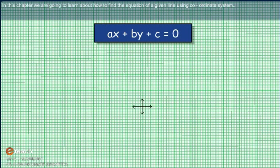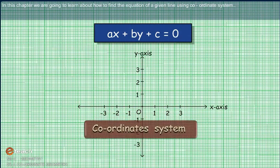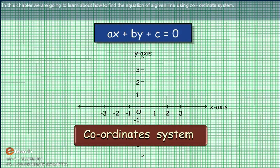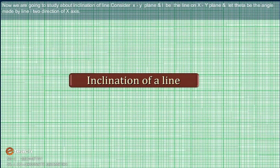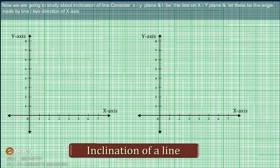In this chapter, we are going to learn about how to find the equation of a given line using a coordinate system. We are going to study about inclination of a line. Consider the XY plane and let L be a line on the XY plane, and let theta be the angle made by line L with the positive direction of the X-axis.